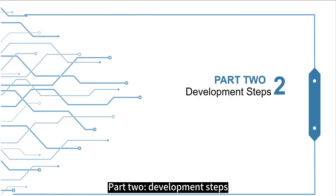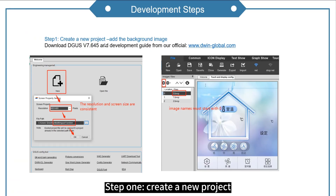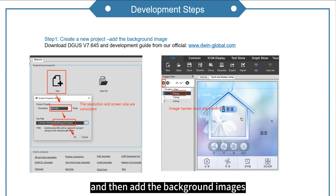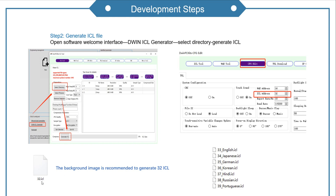Part 2: development steps. There are 5 steps in total. Step 1: create a new project. It should be noted here that the resolution needs to be consistent with the screen, and then add the background images. Image names must start with 0. Step 2: generate ICL file. Click the ICL generator, select the directory, and then generate the ICL file. It is recommended to generate file 32. If you want to name it another number, you need to modify it in the CFG file.